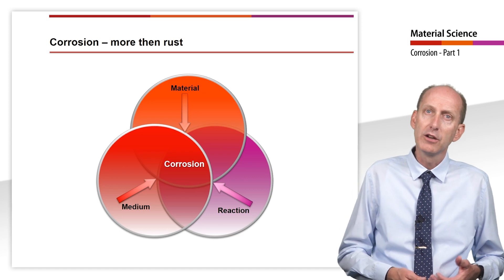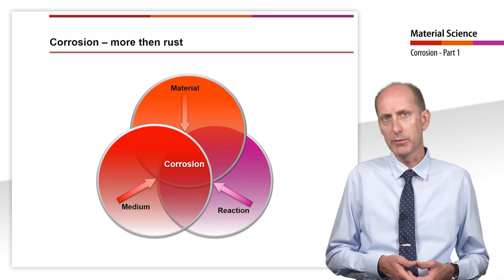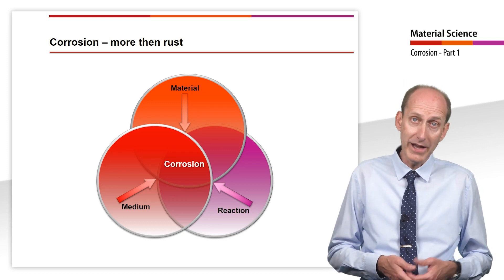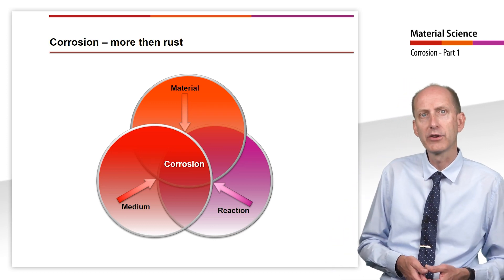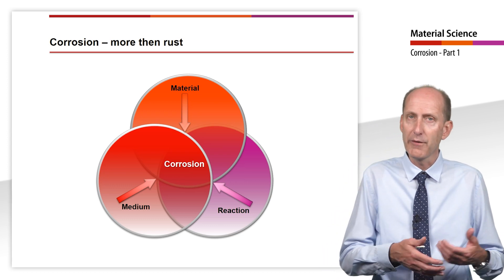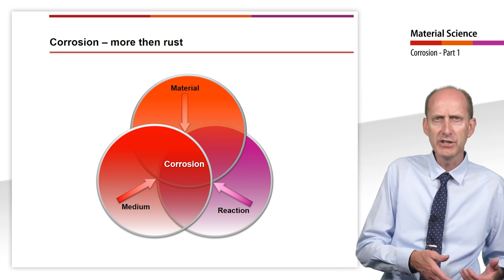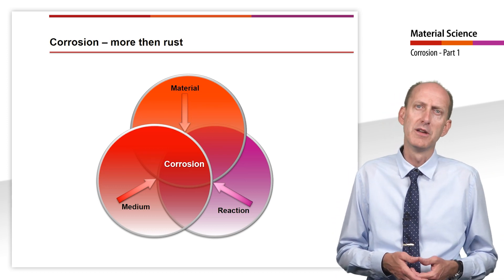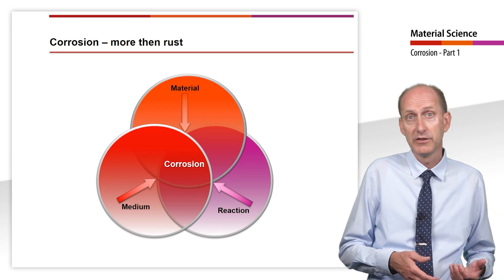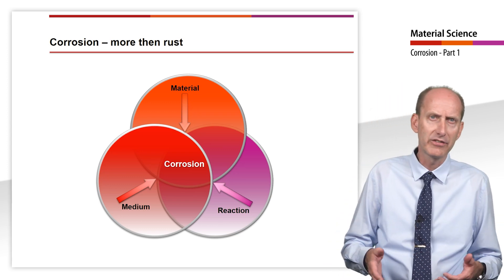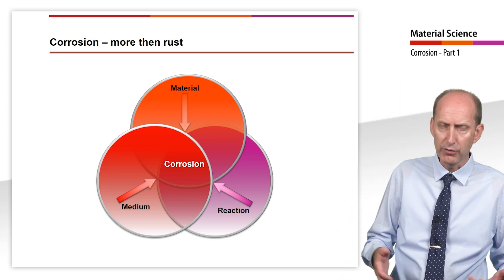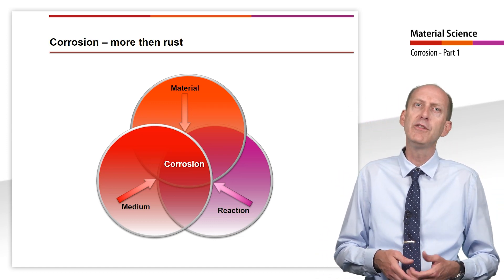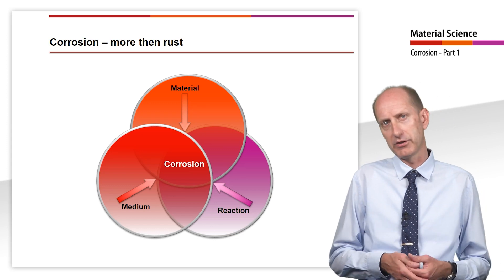However, corrosion resistance is not just a material property, but depends on a variety of factors. We actually always have to look at the corrosion system. Here we first have the material. The condition is not only described by the chemical composition alone, but furthermore also by the processing such as rolling, forging, casting, etc., further processing such as welding, any heat treatment that might have been applied or even the combination with other materials.